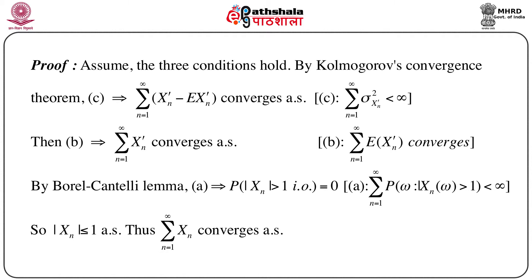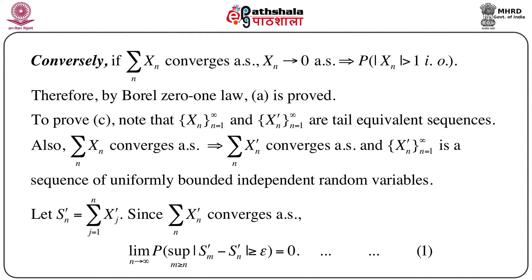Now let us prove the converse: assume that the summation x_n converges almost surely. Since x_n converges to 0 almost surely, the probability that the modulus of x_n is greater than 1 infinitely often equals 0. An immediate application of the Borel 0-1 law proves condition A. To prove condition C, note that the sequence x_n and the sequence x_n prime are tail equivalent sequences.